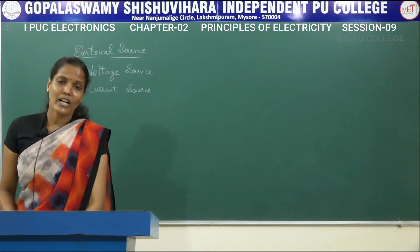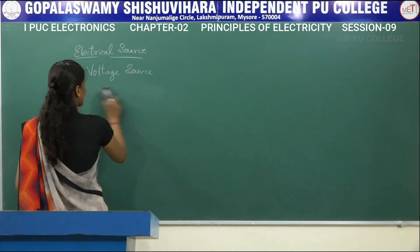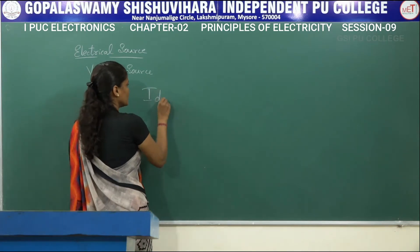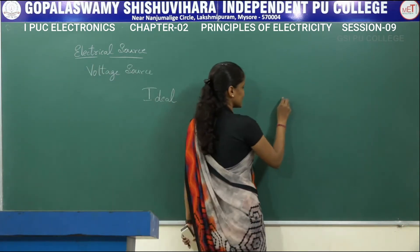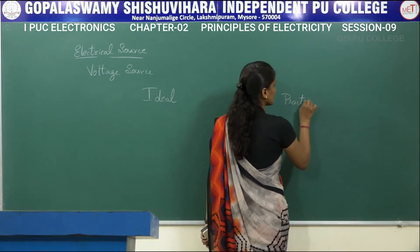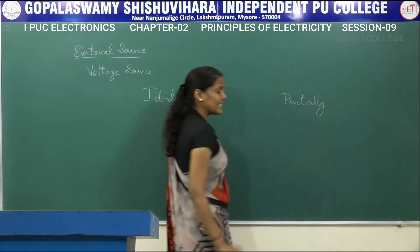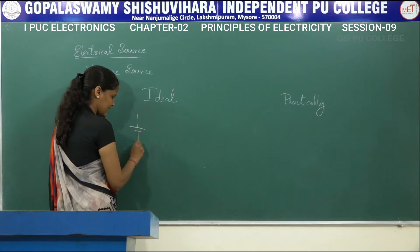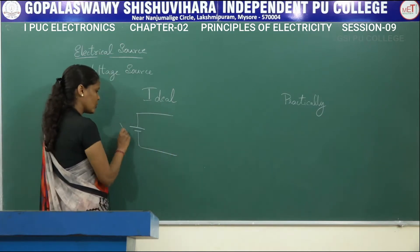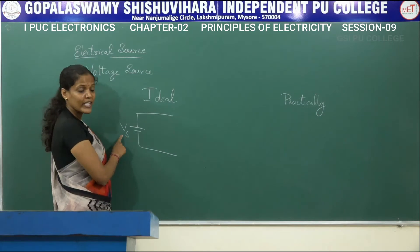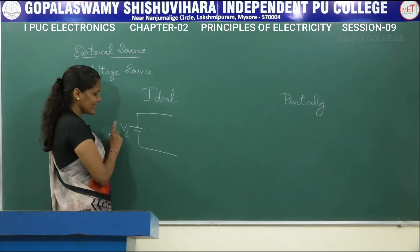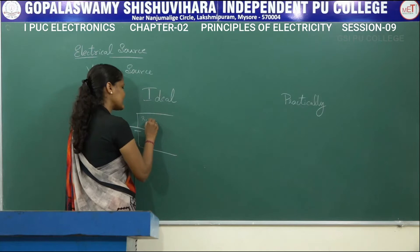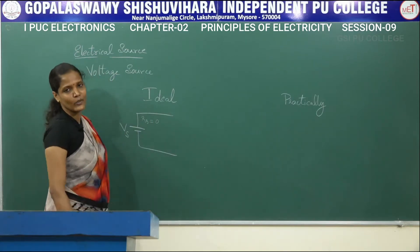Voltage source first. So what is this voltage source? A voltage source is a device which gives a constant voltage to the circuit. There are two ways of analyzing the circuit — one is ideally and the other one is practically. Ideally, this voltage source is represented with internal resistance Rs equal to 0, and is denoted by Vs, where S stands for source and V stands for voltage.